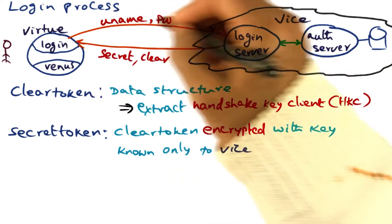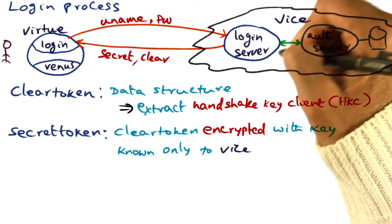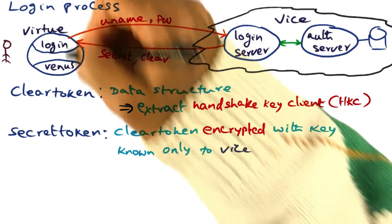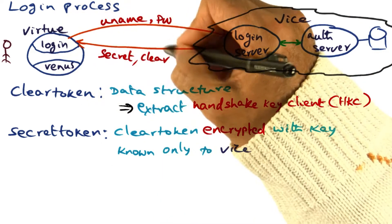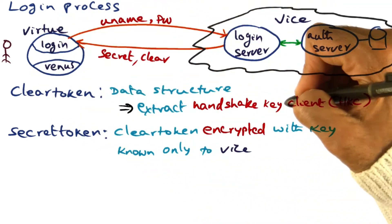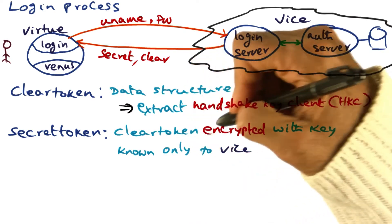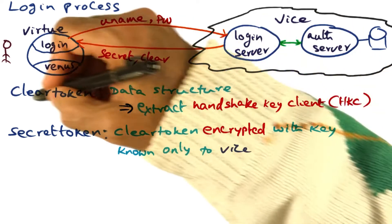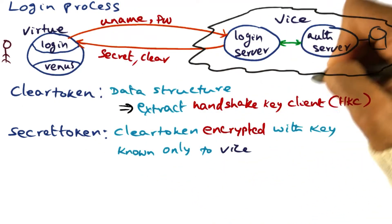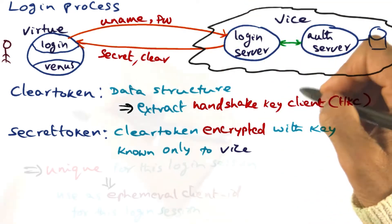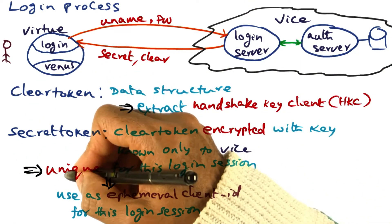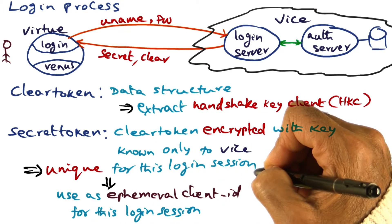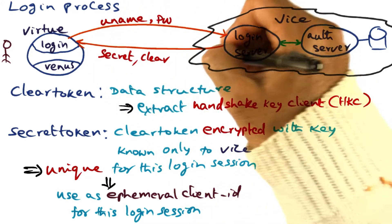To recap: Virtue sends securely the username and password to the login server. The login server securely sends the secret token and clear token back to the login process. From the clear token, the login process extracts the handshake key. The secret token is a bit string — an encryption of the contents of the clear token encrypted with a key known only to Vice — meaning nothing to anybody that sees it on the wire.